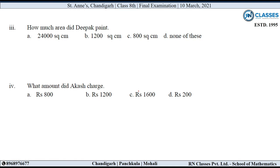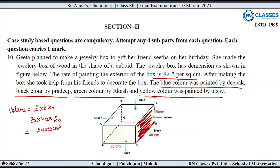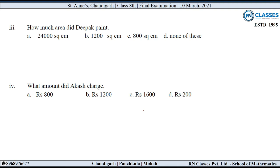Next sub-question: How much area did Deepak paint? Deepak ने blue color से paint किया, जो top surface है। Top surface का area = length into breadth = 30 into 40 = 1200 cm². So option B is correct.